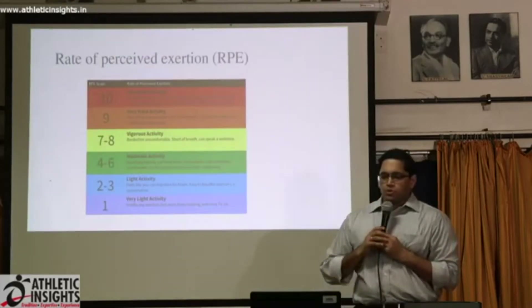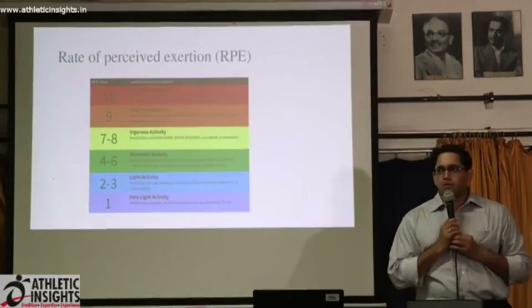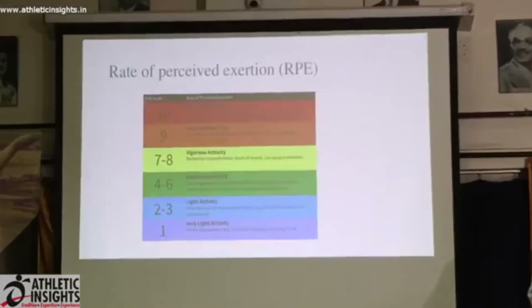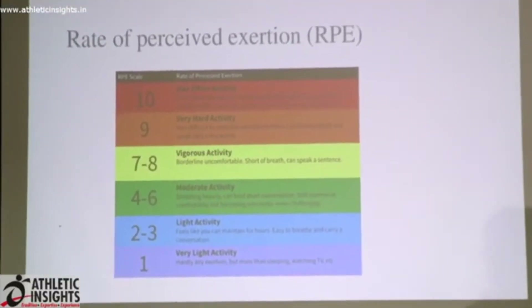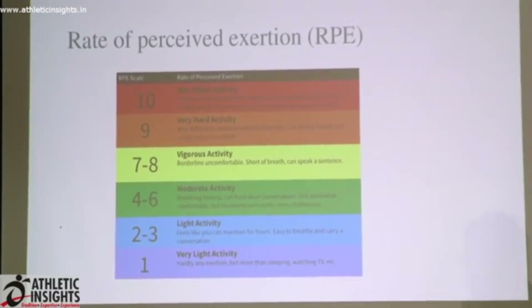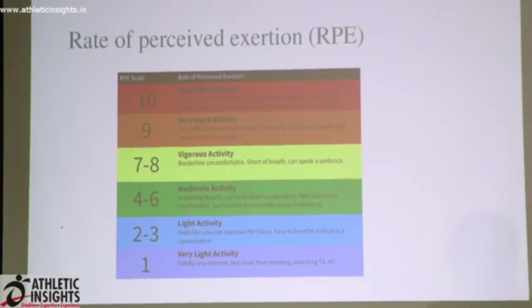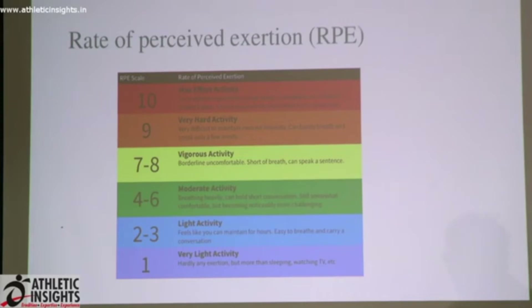How many of you know of this scale — the Rate of Perceived Exertion scale? Less than 10%. The Rate of Perceived Exertion — the original scale was a 6 to 20 scale developed by a psychologist called Borg, and hence it is called the Borg scale of perceived exertion. Basically, he wanted to quantify effort.